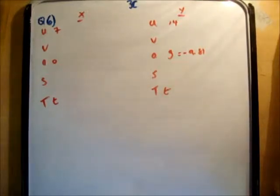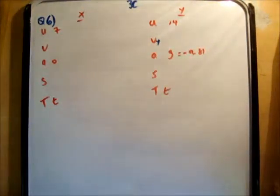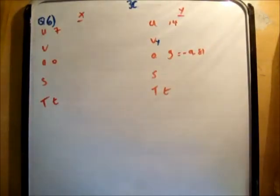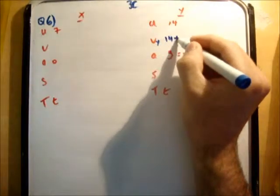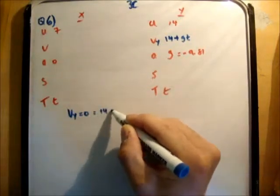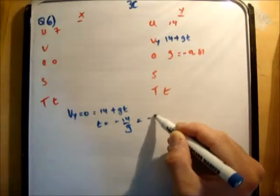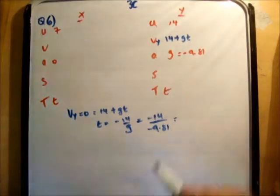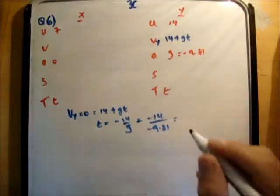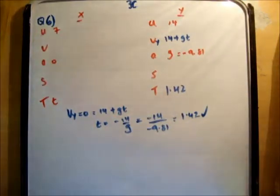The maximum height occurs when v sub y equals 0, because the particle has stopped moving upward. Using v equals u plus at, we get 0 equals 14 plus gt. Therefore t equals negative 14 over g equals negative 14 over negative 9.81, giving t equals 1.42 seconds. So after 1.42 seconds the particle has reached its maximum height above the xy plane.